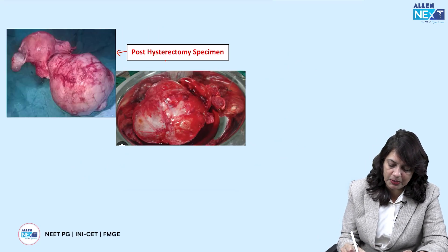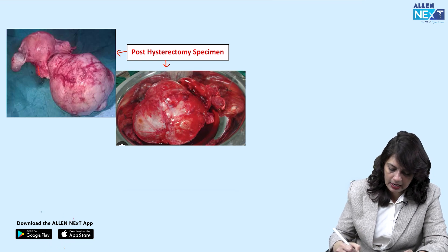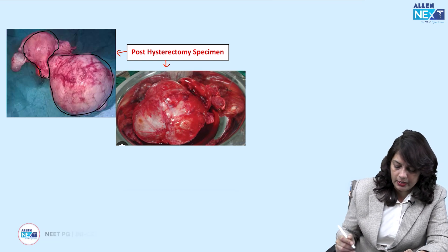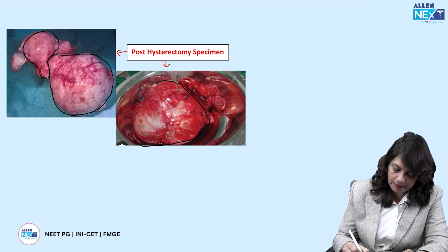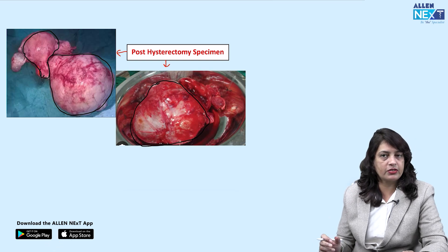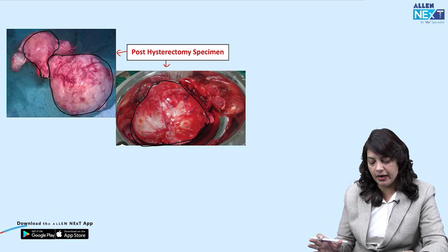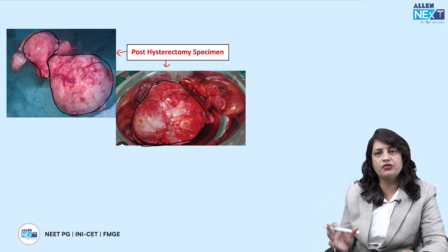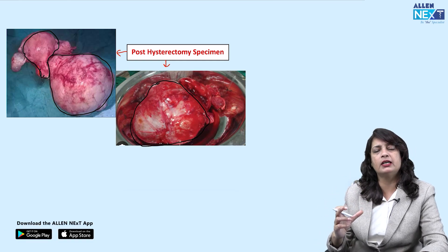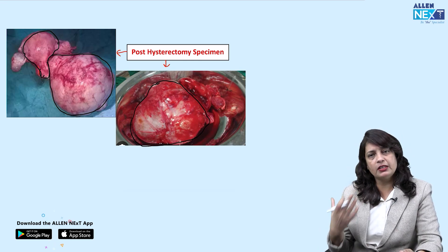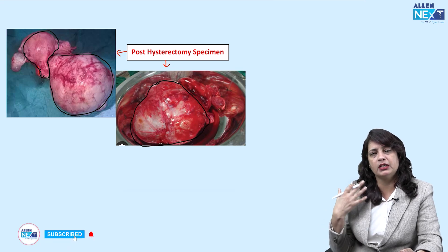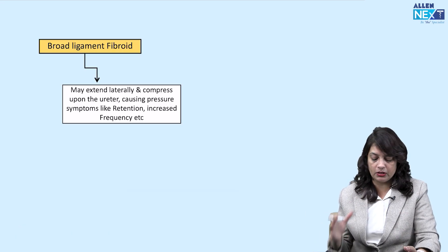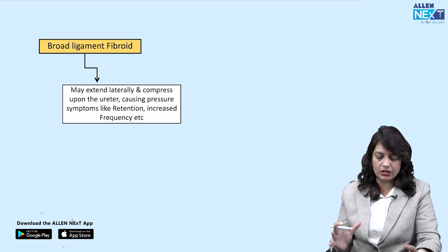The post-hysterectomy specimen showed an enlarged uterus with a large broad ligament fibroid, which was successfully removed. The hysterectomy was in the form of total abdominal hysterectomy with bilateral salpingo-oophorectomy. The course of the ureter was traced during surgery, and the specimen was sent for histopathological examination to confirm the diagnosis.